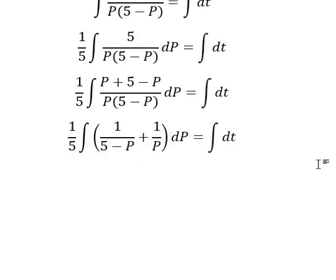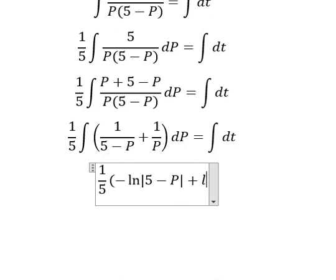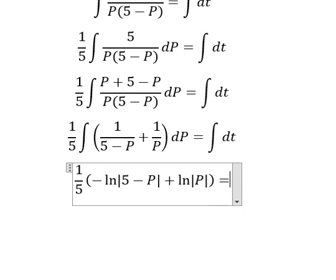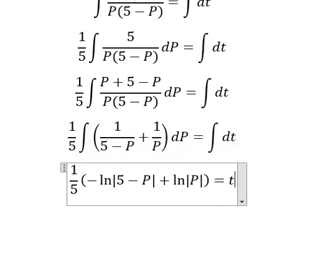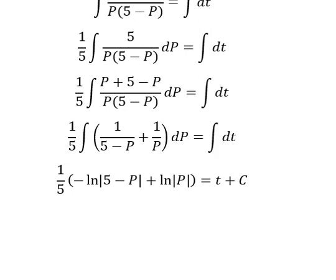The integration of this one, we have negative ln of the absolute value of 5 minus P, and the second one is about T, and I will put C. This is the end. Thank you for watching.